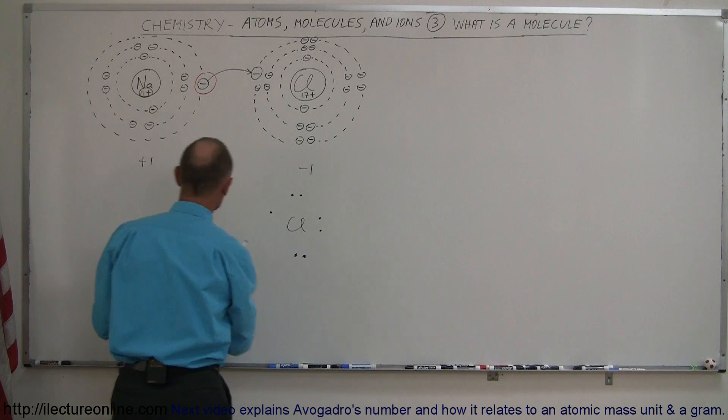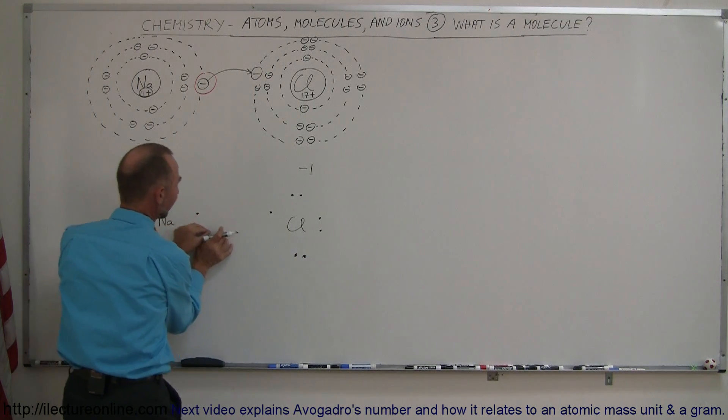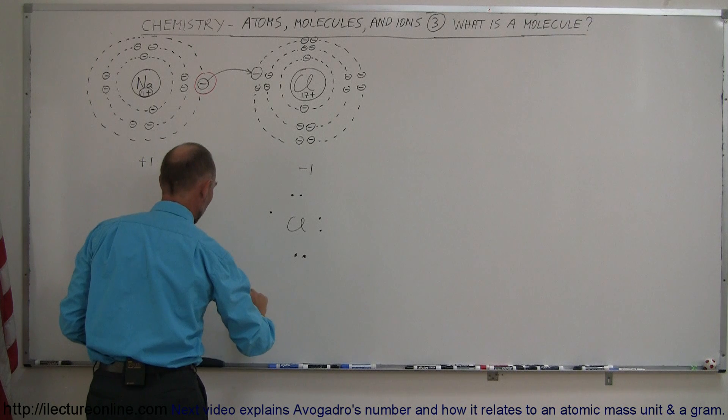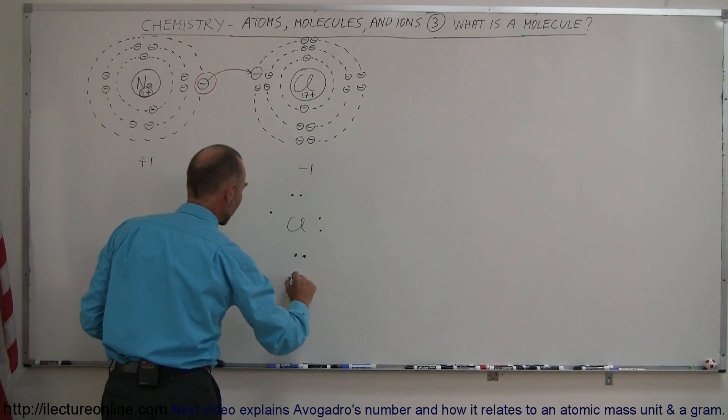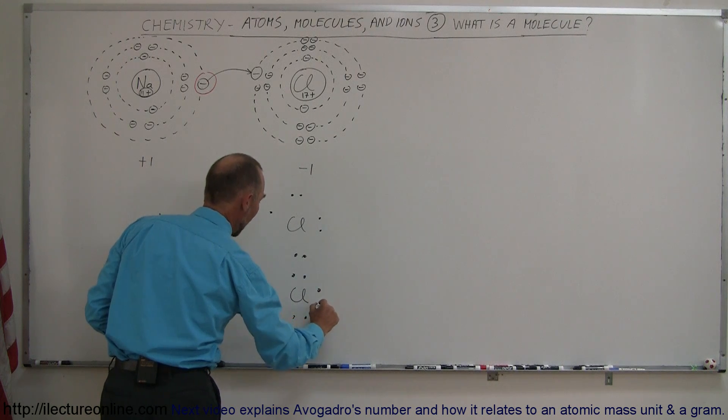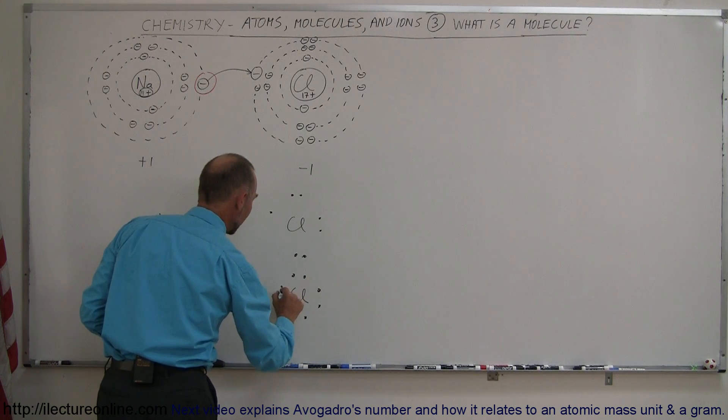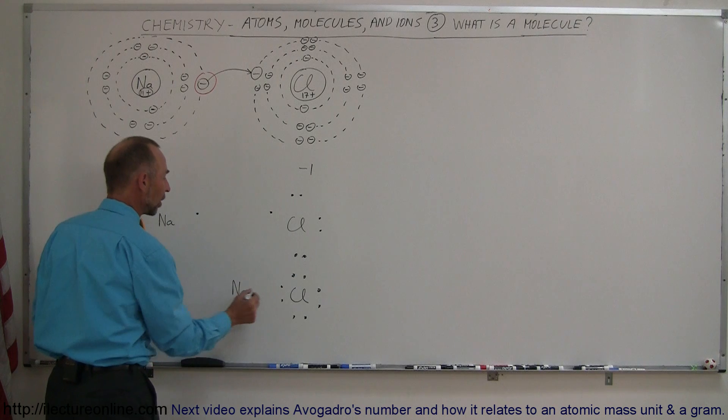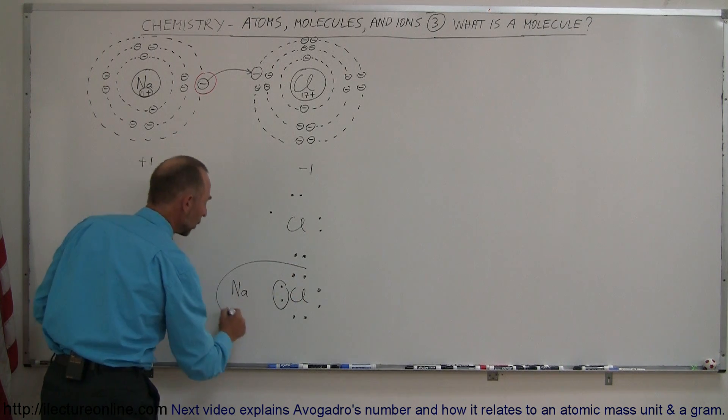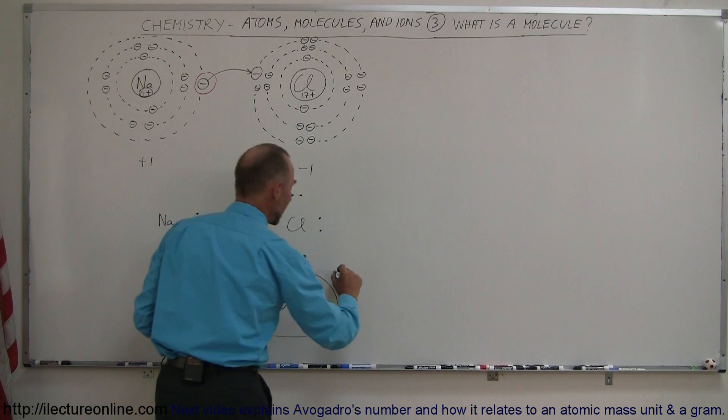So you can easily see then that this electron will tend to come in here and form a bond between those two, so we end up with sodium and chlorine like that, and chlorine is now all happy, because it now has eight electrons in the inner shell, and so this now forms a bond between the sodium and the chloride, which means this is now a molecule.